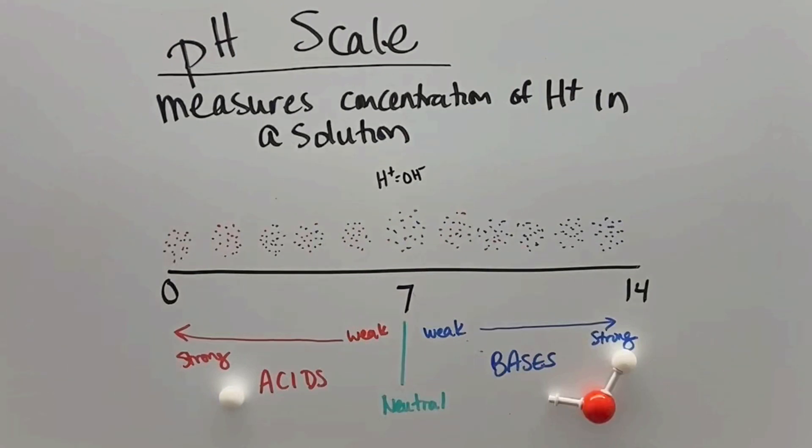As you move up on the pH scale, you get more hydroxides, and as you go down, you get more hydrogens. Acids have a lot of hydrogens, and bases have a lot of hydroxides, as you can see with the molecules at the bottom.